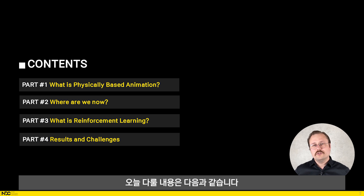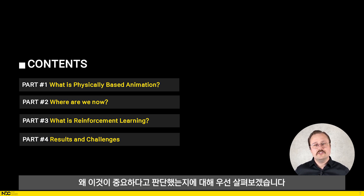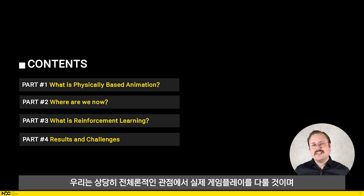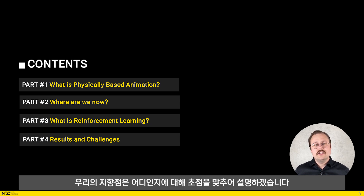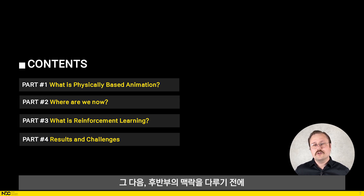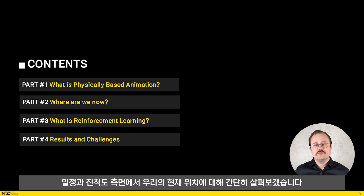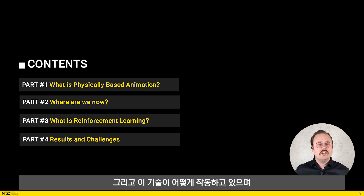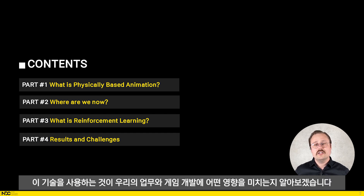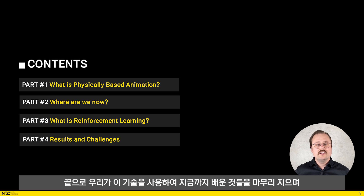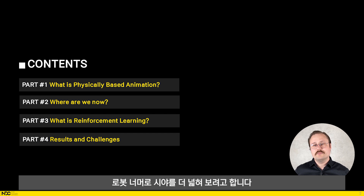To get started, this is what I will talk about today. We will start by going through why we started this work and why we think it is important. We will treat the actual gameplay fairly holistically today and focus on what we're doing to get there and where we want to go. After that I'll give you a quick overview of where we are today in terms of time and progress. We will then dive into how this technique works and how using it affects the way we work and develop games. Finally I'll round off with what we've learned so far and widen the horizons a bit beyond robots.